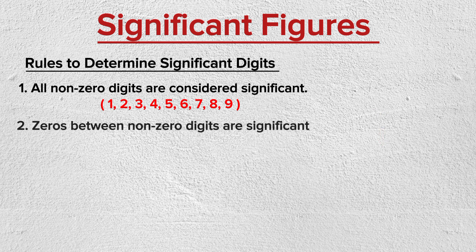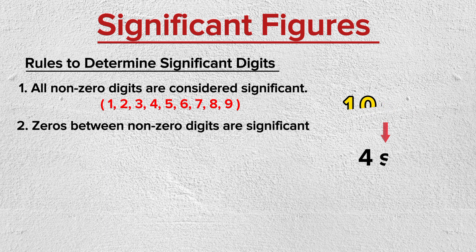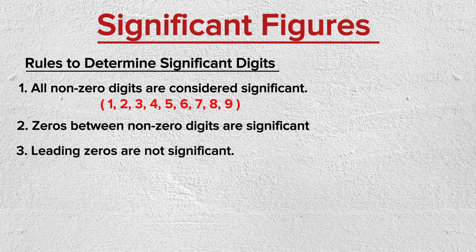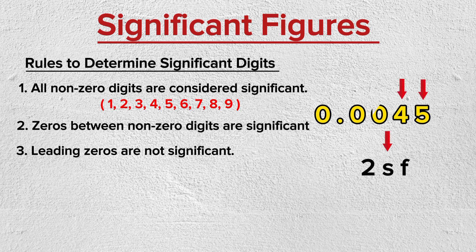Rule 2: Zeros between nonzero digits are significant. For example, 1002 has four significant figures. Rule 3: Leading zeros are not significant — that is, zeros that appear before the first nonzero digit are not significant. For example, 0.0045 has two significant digits.